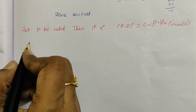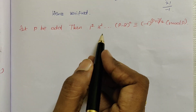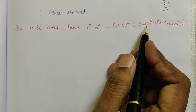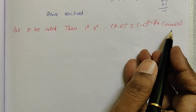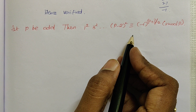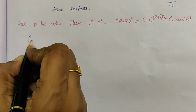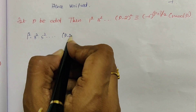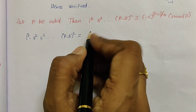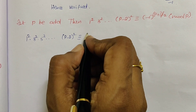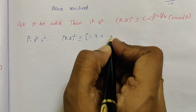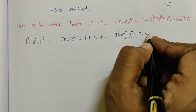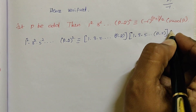The next problem: let p be prime, then 1² · 3² · 5² · ... · (p-2)² ≡ (-1)^((p+1)/2) mod p. Starting with the left hand side, it is 1² · 3² · 5² · ... · (p-2)², which can be written as [1 · 3 · 5 · ... · (p-2)] · [1 · 3 · 5 · ... · (p-2)] mod p.